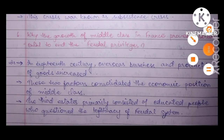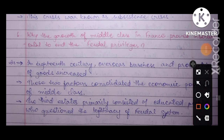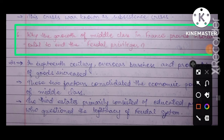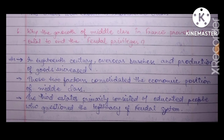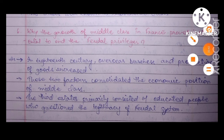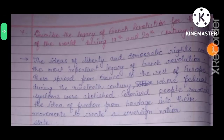Question six: why did the growth of the middle class in France prove instrumental in ending feudal privileges? In the 18th century, overseas trade and production of goods increased. These two factors consolidated the economic position of the middle class. The third state primarily consisted of educated people who began to question the legitimacy of the feudal system.